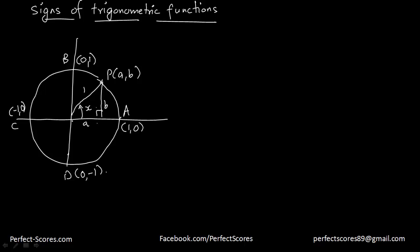I'm going to add another extension to the diagram: an angle of negative x. Remember, angles are negative when they go clockwise. The corresponding point will be Q, which has coordinates (a, -b). This perpendicular distance is also b, and the horizontal distance is a.